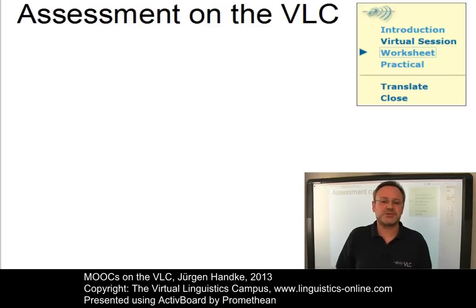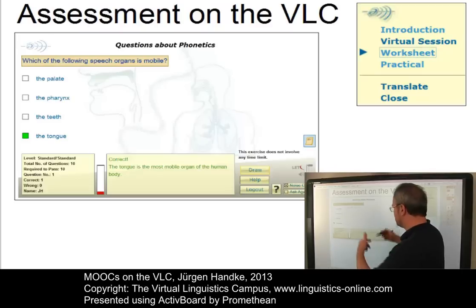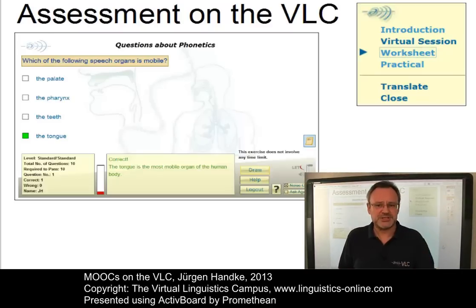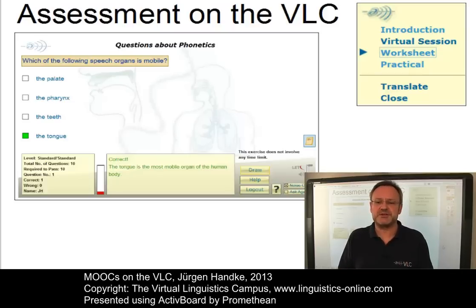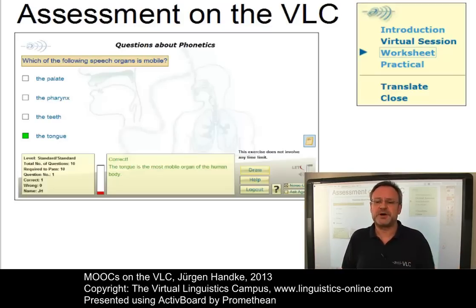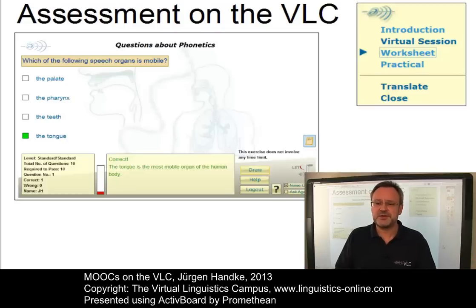Here is the electronic test — a so-called worksheet for the unit Phonetics. It is a relatively simple multiple-choice task. Worksheets have to be passed; that is, you have to score at least 60%. If you do not reach 60% in a first attempt, don't worry — you can try as often as you like and no one will notice. Only if you pass will your score be stored in the VLC database. And if you are not satisfied with your score, you can do it again and raise your score until you are satisfied.